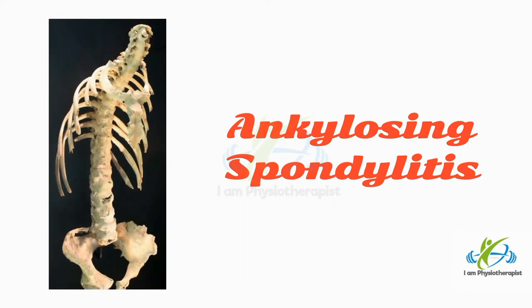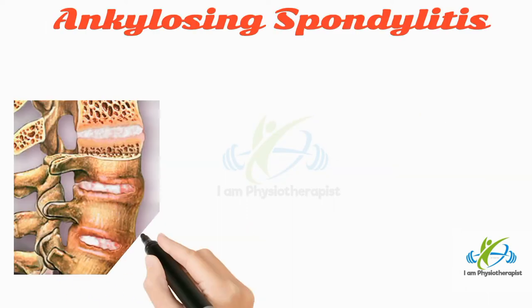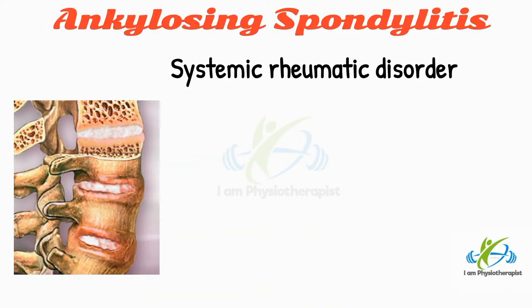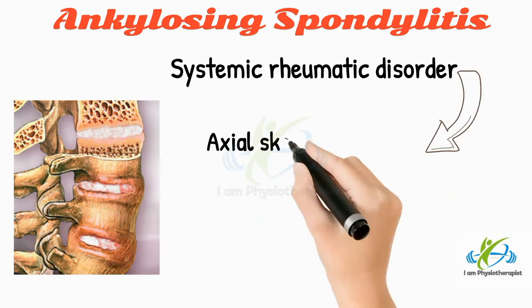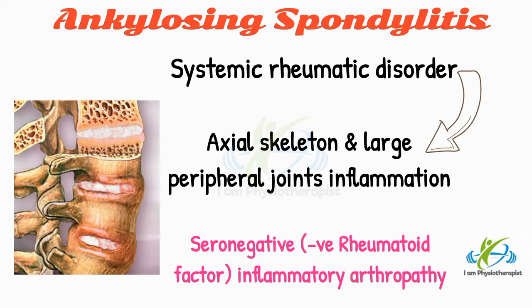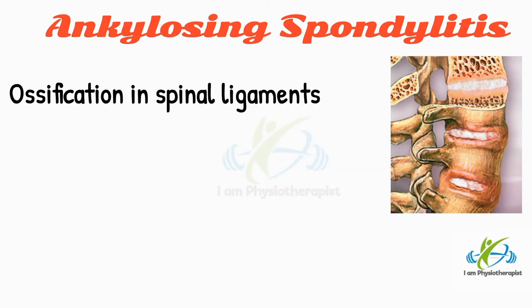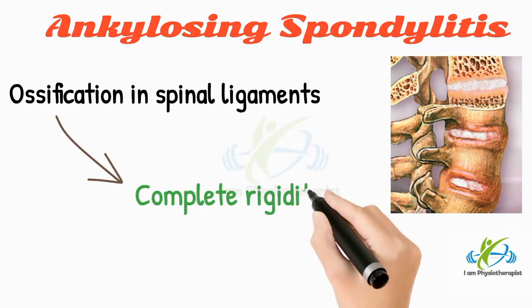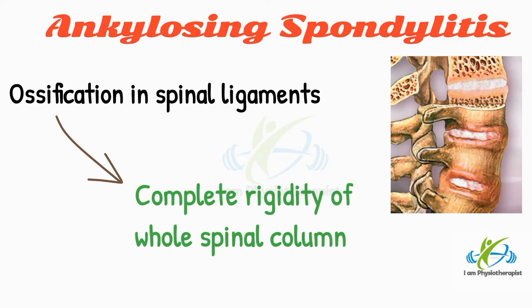Ankylosing spondylitis is a systemic rheumatic disorder characterized by inflammation of the axial skeleton and large peripheral joints. It is one of the seronegative inflammatory arthropathies, progressing slowly to bony ankylosis. Ossification takes place in the spinal ligaments, and finally there is complete rigidity of the whole spinal column.